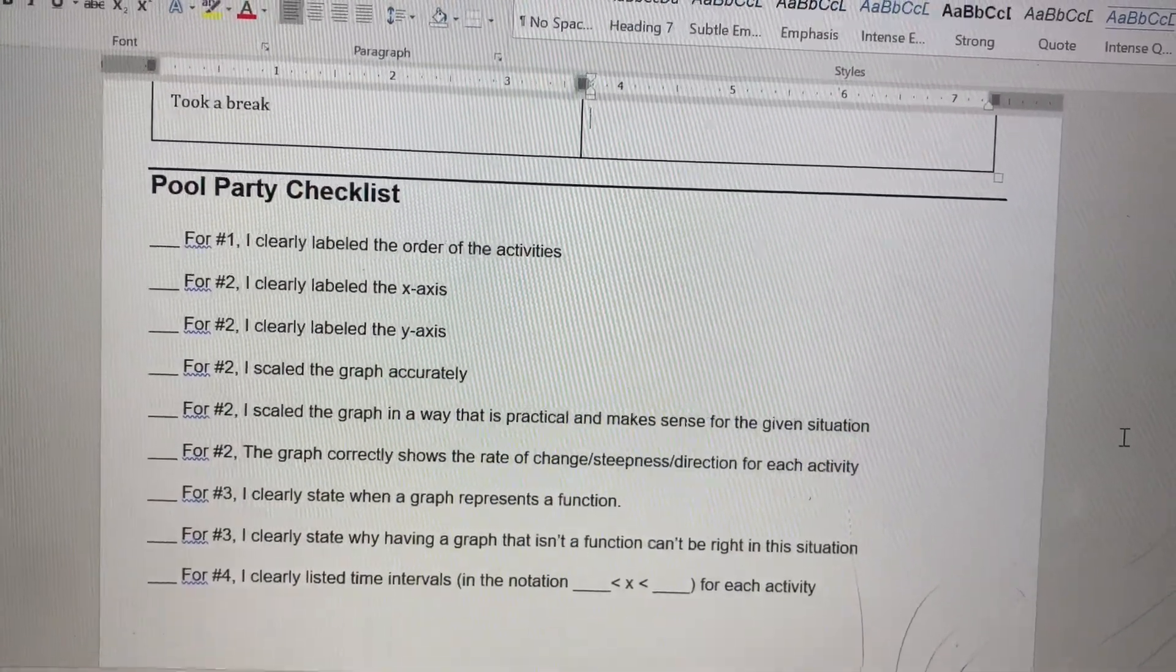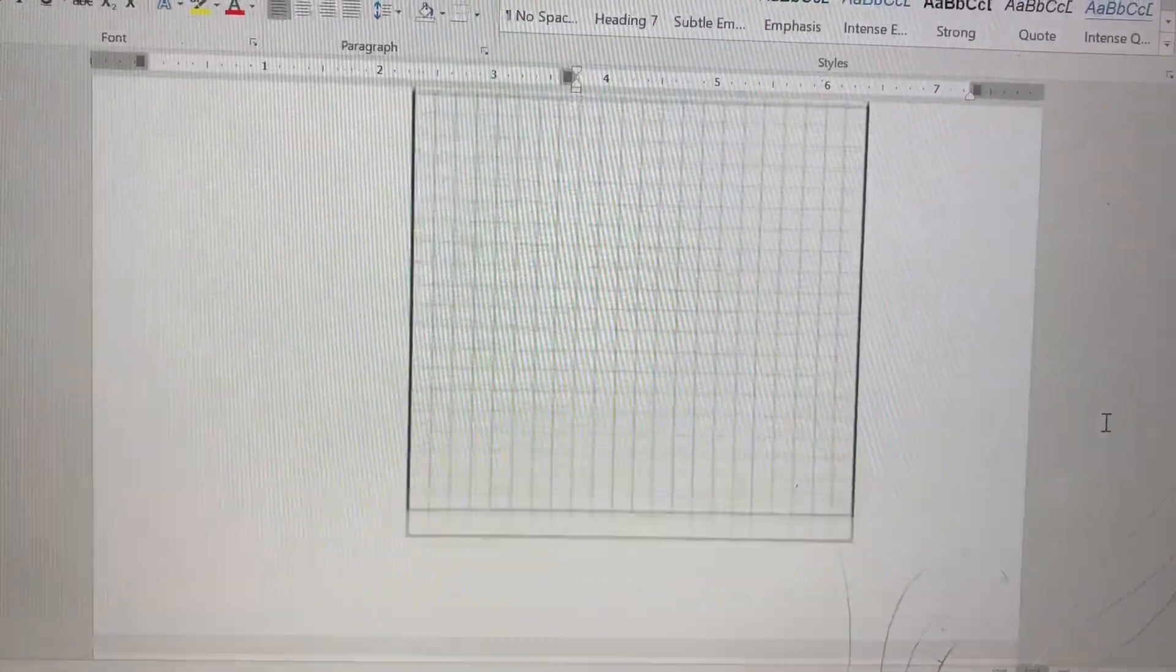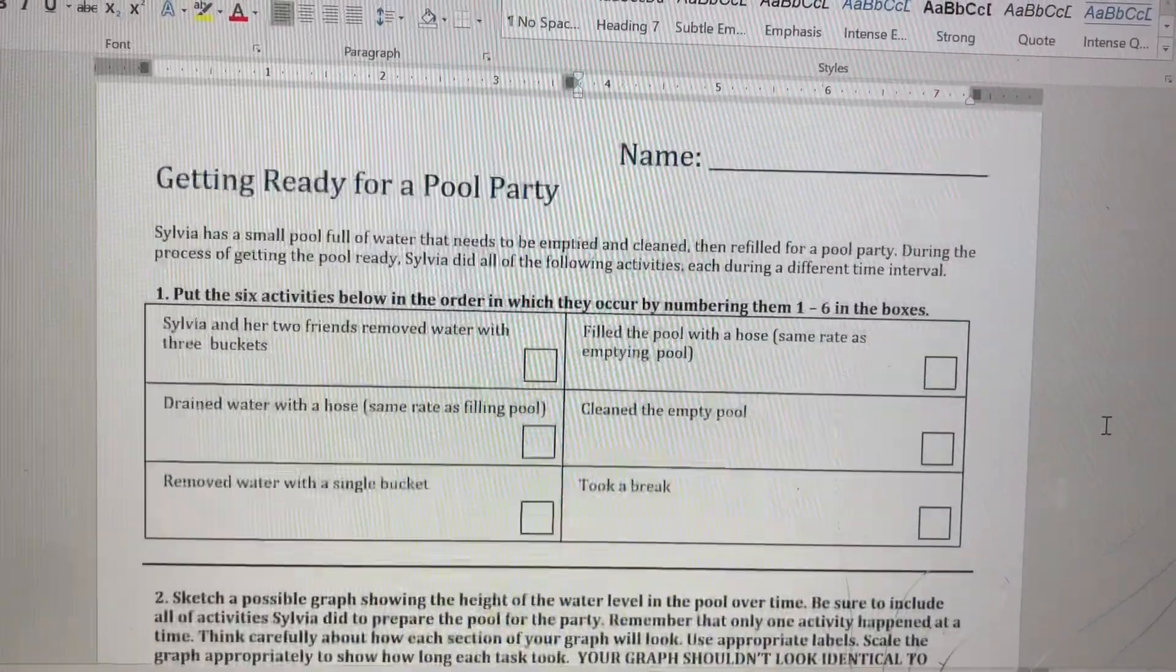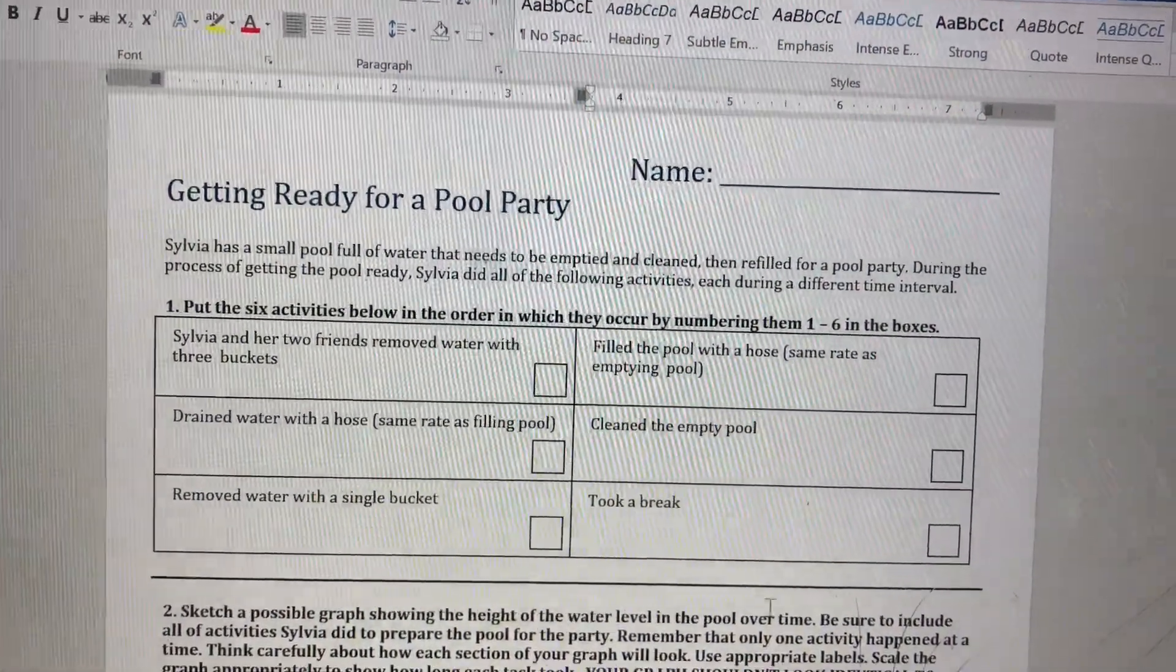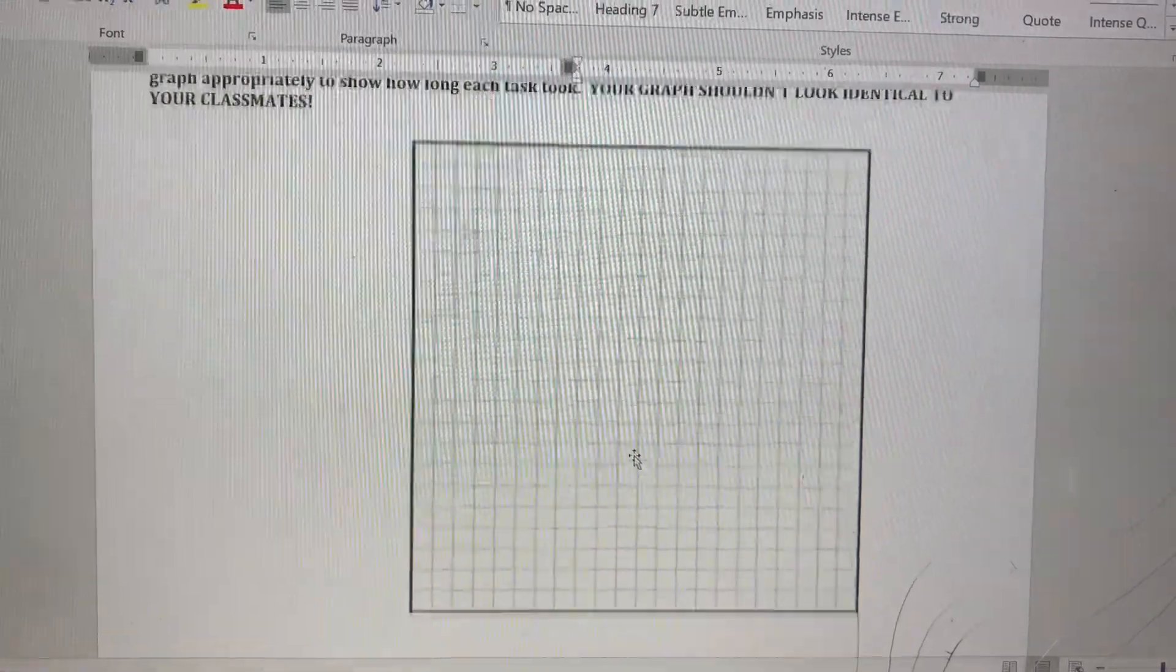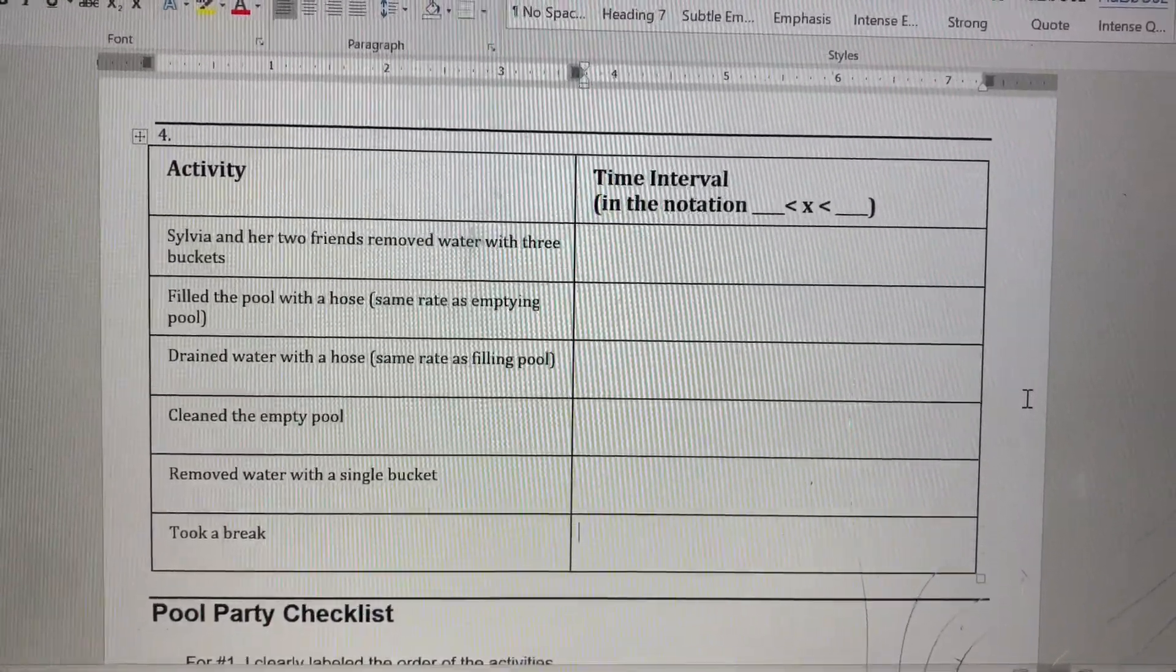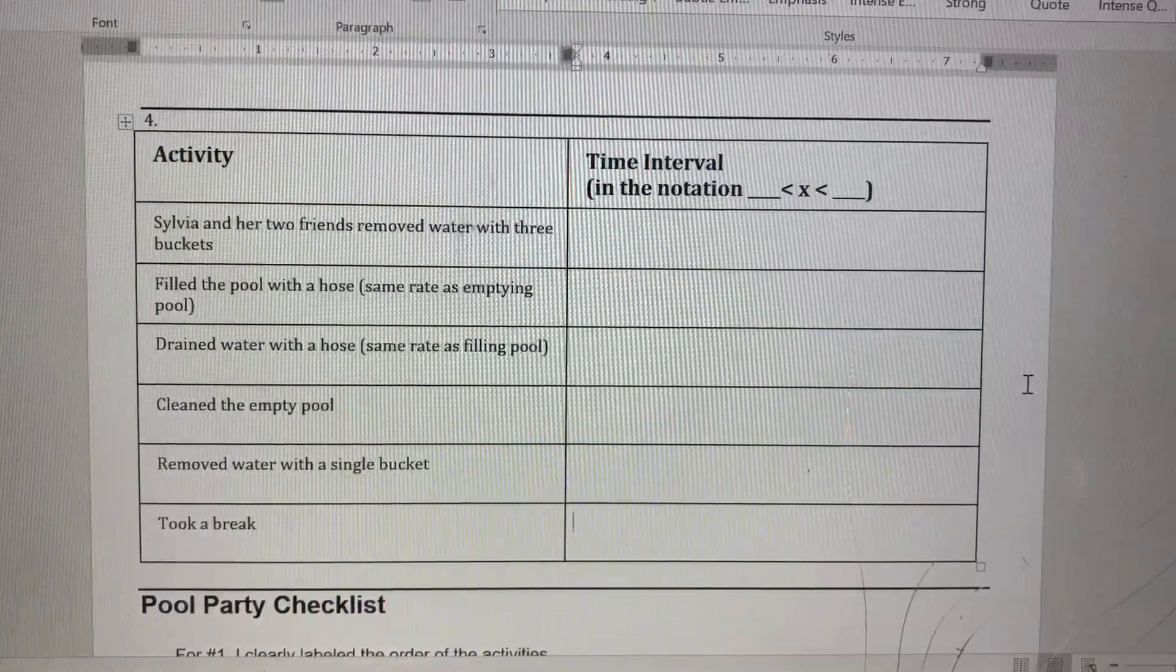Yours should not look like anyone else's really, because you're determining how much time all these activities will take. You might have a different sequence, so again there's not one right answer. The way that you organize these is going to kind of determine what your graph looks like, and then of course what your graph looks like with the units is going to determine how your specific time intervals will look on this last page. Alright guys, best of luck. I appreciate you and I hope to see you Friday.